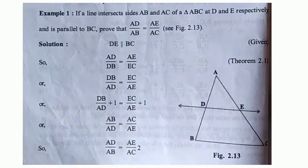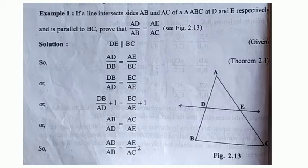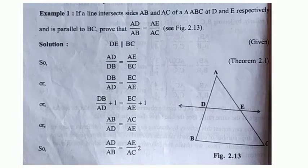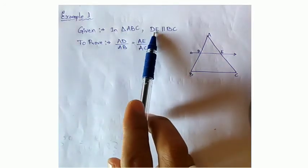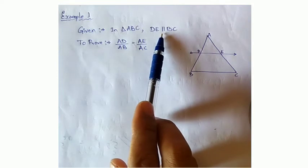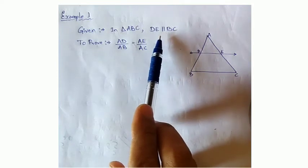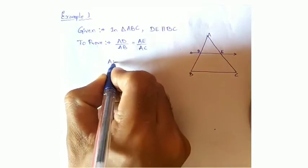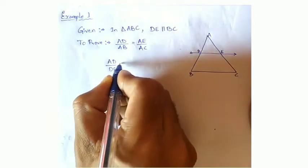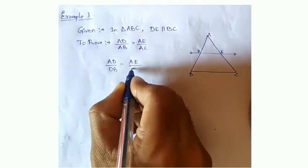Example number 1: if a line intersects sides AB and AC of a triangle ABC at D and E respectively and is parallel to BC, prove that AD by AB is equal to AE by AC. Here, as per the given, in triangle ABC, DE is parallel to BC. Now applying the BPT, that is Basic Proportionality Theorem, we will get AD by DB equal to AE by EC.